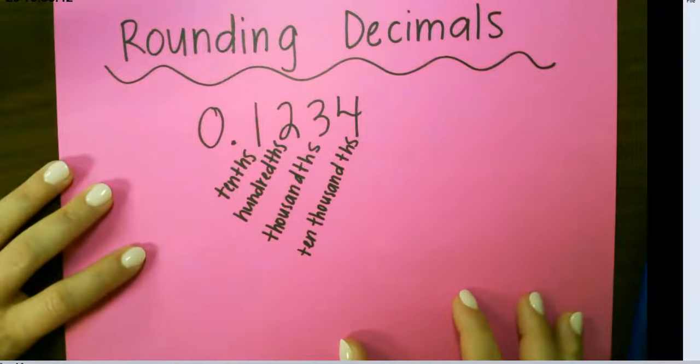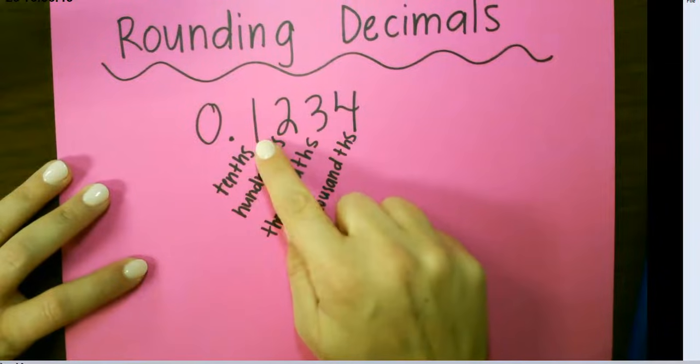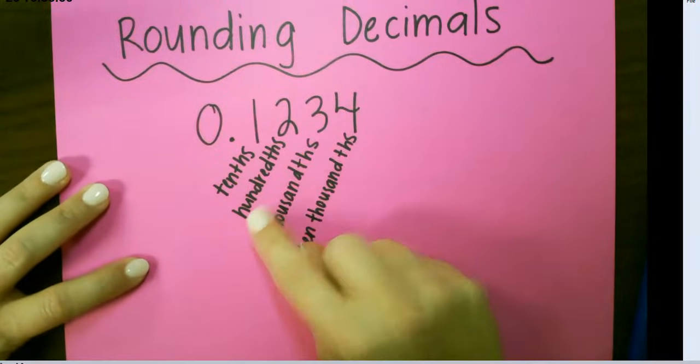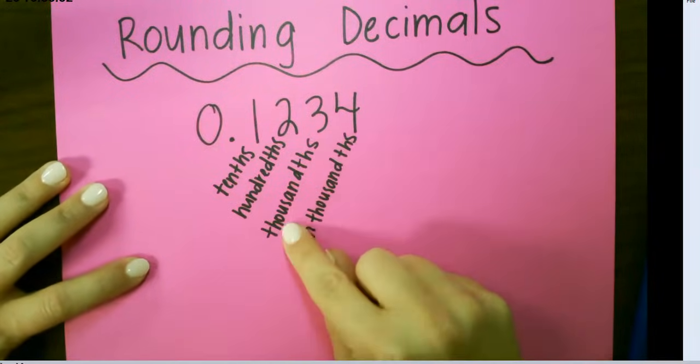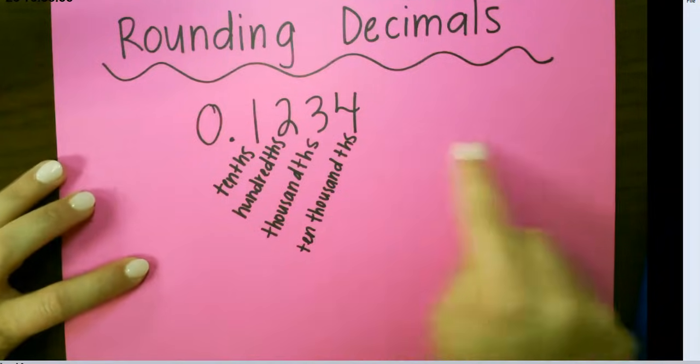Let's look at rounding decimals. This is just a review of our place values. The first number after the decimal is the tenths place. The second number is the hundredths place. The third number is the thousandths place. And the fourth number is the ten thousandths, and it will continue going from there.